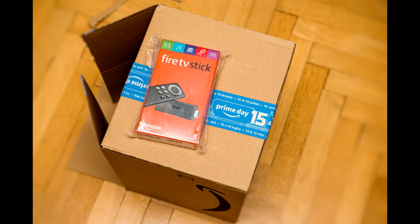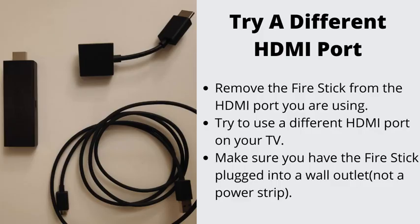Number 5: Try a Different HDMI Port. A faulty HDMI port can possibly be an issue, so the next step in fixing your Fire Stick Optimization Loop should be: remove the Fire Stick from the HDMI port you are using, try a different HDMI port on your TV, and make sure the Fire Stick is plugged into a wall outlet.